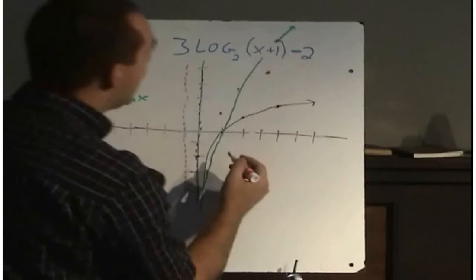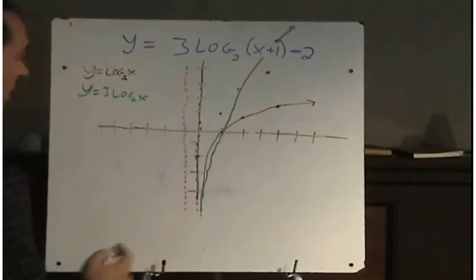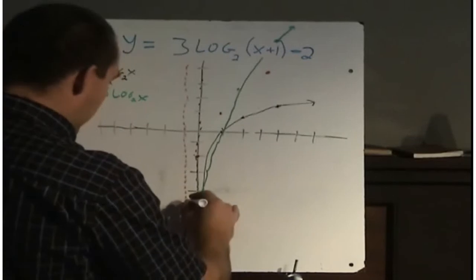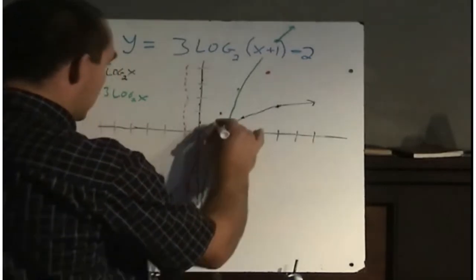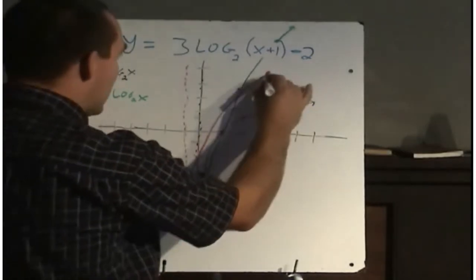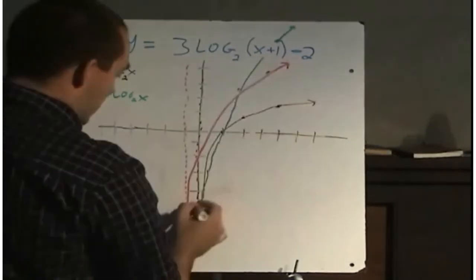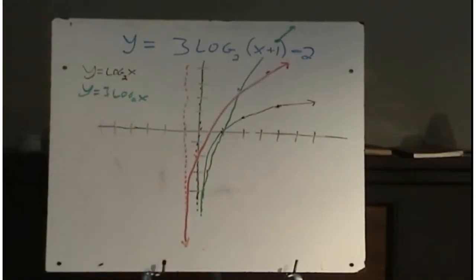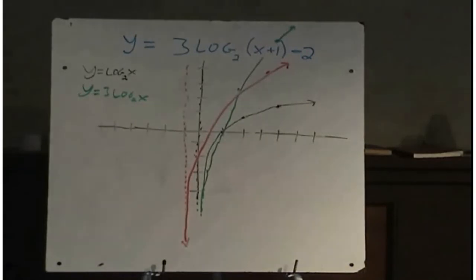I've taken my three key points on the green graph and moved them all left 1 and down 2, and I've got my asymptote. The graph comes along the asymptote, hits each point, and gradually curves to the right. That red graph represents a sketch of the function y equals 3 log base 2 of x plus 1, minus 2.